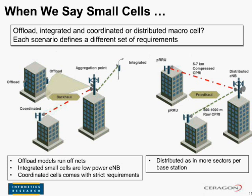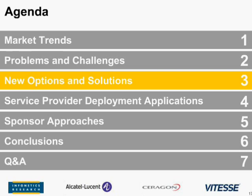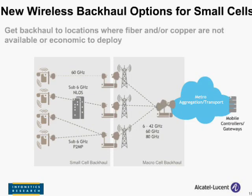We've heard quite a bit about the challenges in terms of location, scale, bandwidth, networking, timing, synchronization, and cost control for deployment of small cells and small cell backhaul solutions. It could be quite depressing, but here's the good news: there are some solutions, so we're going to hear some of those now. I'm going to turn first to Heidi from Alcatel-Lucent. Heidi, could you tell us more about the wired and wireless options for small cell backhaul?